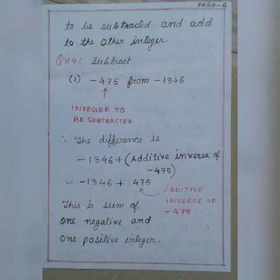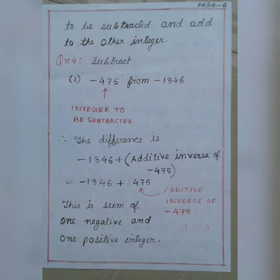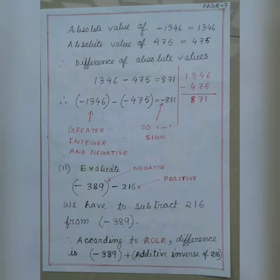The opposite of minus 475 is plus 475. Now we have minus 1346 plus 475 — one number is positive and one is negative. We find the difference of absolute values: absolute value of minus 1346 is 1346, and absolute value of 475 is 475. The difference is 1346 minus 475 equals 871. The greater number 1346 bears a negative sign, so the result is also negative. Therefore, minus 1346 minus minus 475 equals minus 871.